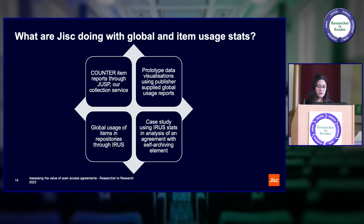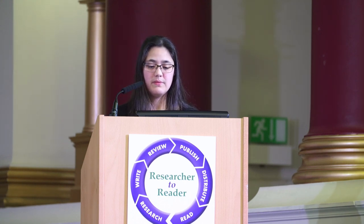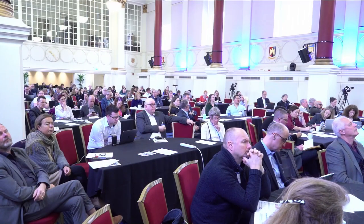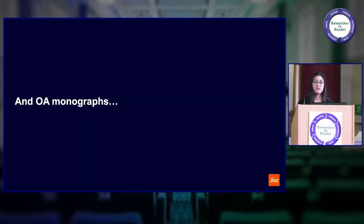We also have a service called the Institutional Repository Usage Statistics Service, called IRIS. In IRIS, we have been providing item and global-level stats for repositories for many years. It's a completely open service — if you want to go and have a global item report now, you can do so. We're also looking to take the repository usage data and take a case study approach to apply it to an analysis of an agreement with a self-archiving element, which we're planning to do internally and then write up and present. Finally, before handing over to Tasha, I want to mention OA monographs. We've been very much focused on articles and journals, but we have already started thinking a lot about how we support open access monographs.